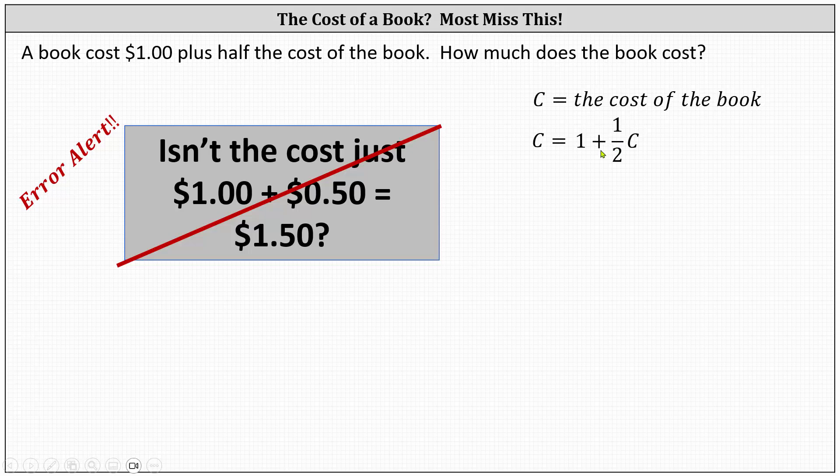Again, not plus 1 half, but plus 1 half C for 1 half the cost of the book. Now it might be helpful to write one half in decimal form or 0.5, giving us the equation C equals 1 plus 0.5 C.